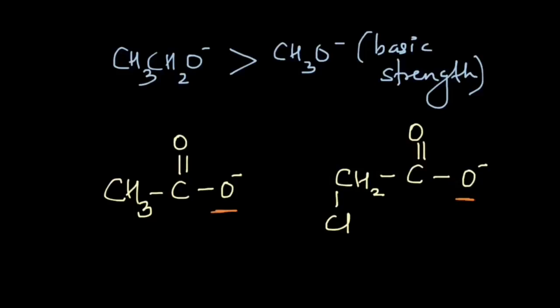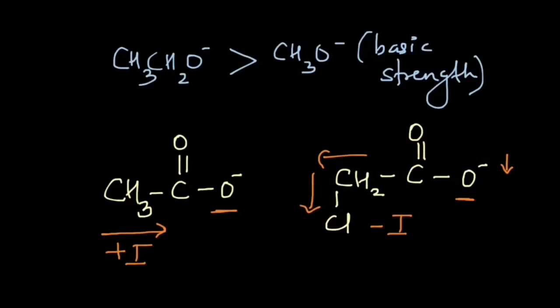The methyl group will show a +I effect, whereas the chlorine atom, being more electronegative, will attract electrons towards itself and show a −I effect. So what is happening here is that chlorine is decreasing the negative charge whereas the methyl group is increasing the negative charge — and as charge increases, stability decreases.